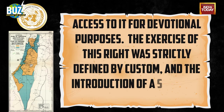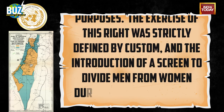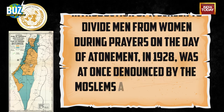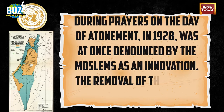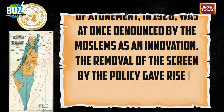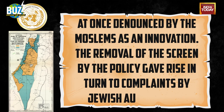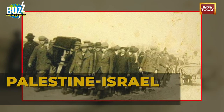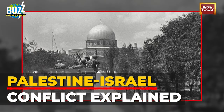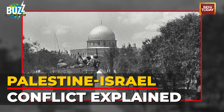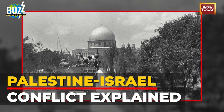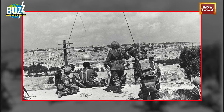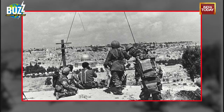The exercise of this right was strictly defined by custom, and the introduction of a screen to divide men from women during prayers on the Day of Atonement in 1928 was at once denounced by the Muslims as an innovation. The removal of the screen by the police gave rise in turn to complaints by Jewish authorities. After this incident, the Supreme Muslim Council declared their belief that the Jews' aim is to take possession of the Mosque of Al-Aqsa gradually — the same Al-Aqsa Mosque that has been the center of violence between Israeli police and Palestinians for the last two weeks.